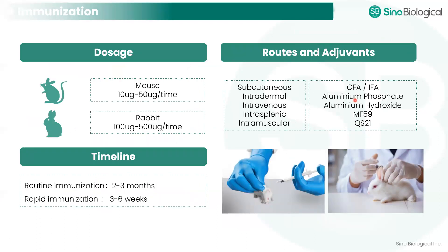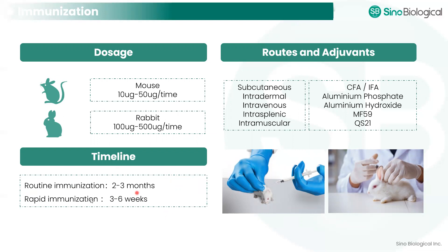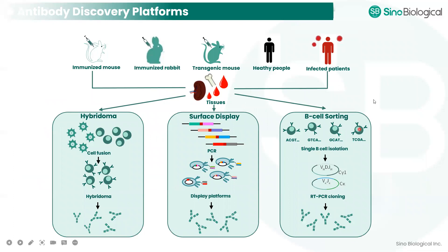After obtaining high-quality antigens, we have to decide the immunization procedures, including the dosage, routes, adjuvants, and timelines. For example, if we want to generate antibodies in a short period of time, we can choose rapid immunization, which only takes about three to six weeks compared with the regular immunization process of about two to three months. After successful immunization, we can choose different antibody discovery platforms, including the classical hybridoma process, antibody library display, or B-cell sorting, which is the focus of today's talk.